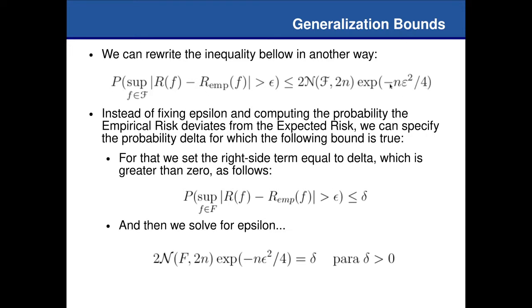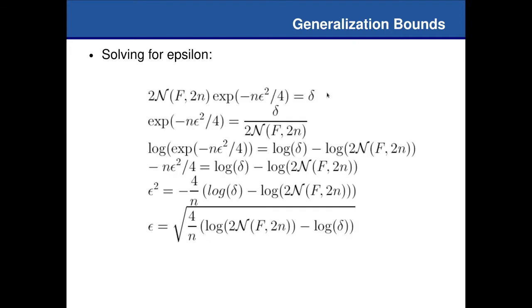So from this empirical risk minimization principle, we just make this upper term equal to delta — everything on the right is going to be delta — and then we solve this delta equals to the right term. We solve for epsilon. Of course, assuming delta is greater than zero; it's just impossible to have a negative delta, because this is an upper bound in terms of a probability. So, making delta equal to this term, we solve for epsilon. We can divide delta by two times the Shattoui coefficient, as shown here. Then we can apply a log function on both sides.